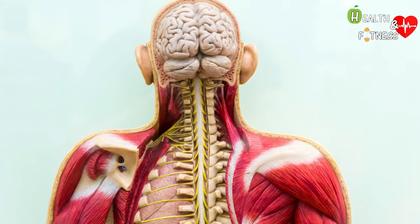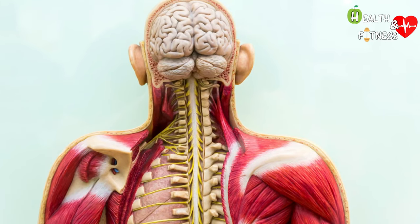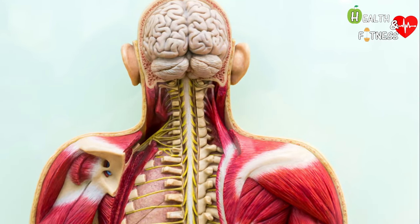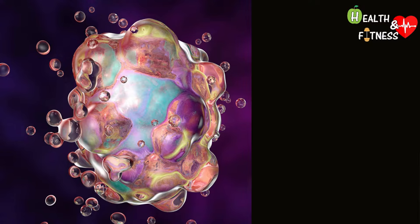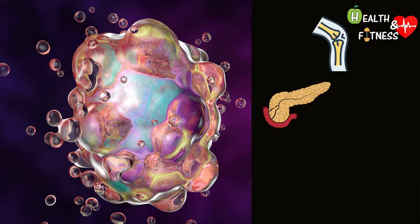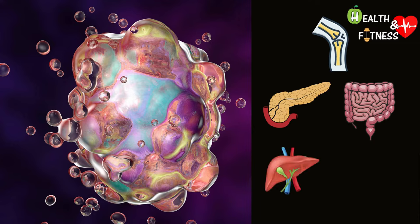The speed and extent of the autolytic phenomenon in the various parts of the organism vary according to the type of tissue. Autolysis has a slow and less intense course in tissues with a high connective component. It is rapid in the pancreas, intestinal gastric mucosa, and adrenal medulla. Intermediate in the liver, spleen, kidneys, muscles, and brain.